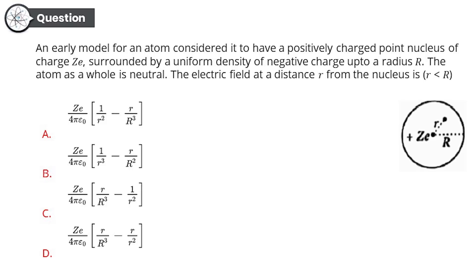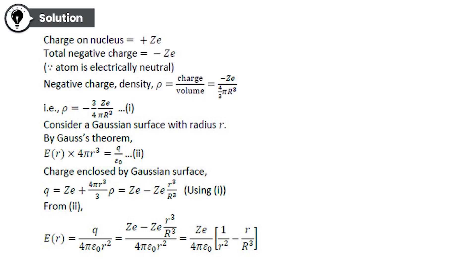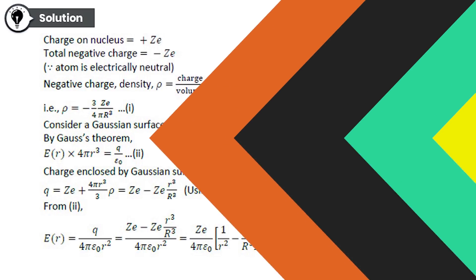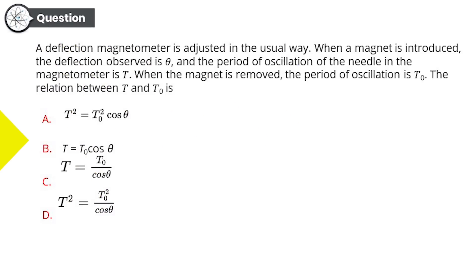And the correct option for this is option A: Z by 4πε₀ [1/r² - r/R³]. I believe you must be looking forward for a solution for this, and here it is. Have a very close look, and I believe you definitely got it right. Good job.